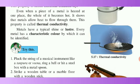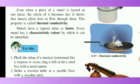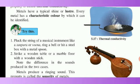When a piece of metal is heated, the entire metal gets heated. This shows that metals allow heat to flow through them. This property is called thermal conductivity. Every metal has a characteristic shine and luster, and a characteristic color by which it can be identified.